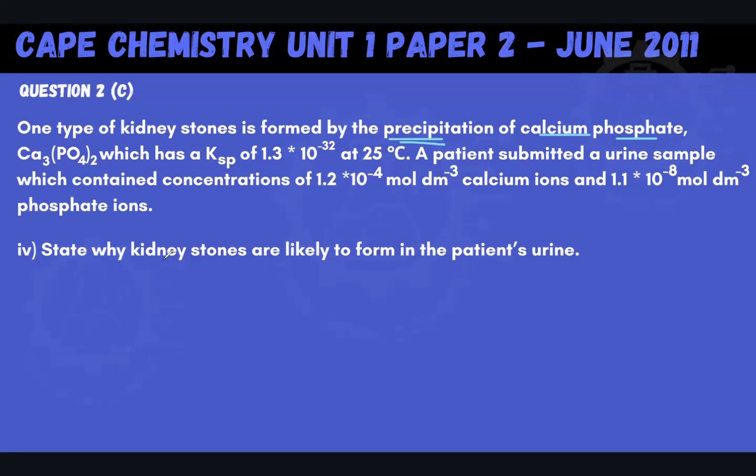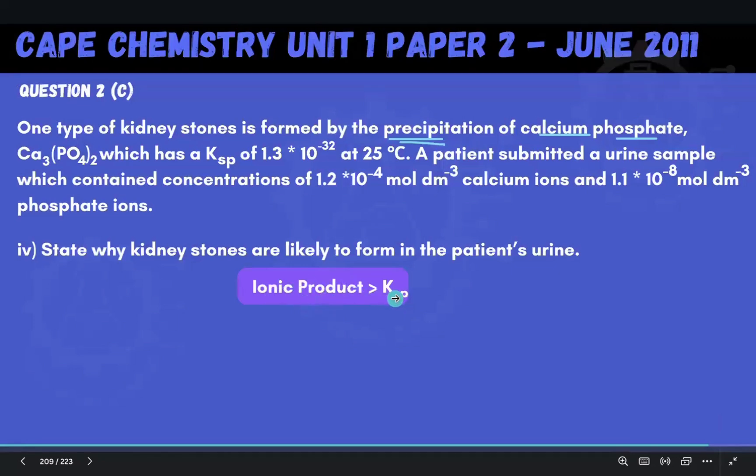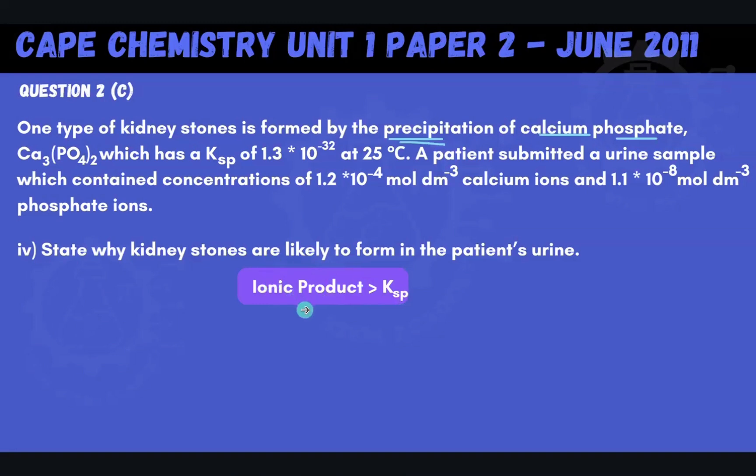And so the only condition under which kidney stones are likely to form in the patient's urine is if we have some kind of a precipitation taking place. And this is the condition under which precipitation takes place. Precipitation is going to take place if the ionic product is greater than the Ksp. So that means that your ionic product, if your ionic product exceeded your Ksp, which tells you the saturation point, if you exceed the saturation point for that solution, you're going to get precipitation.